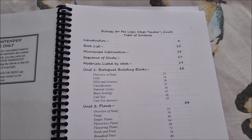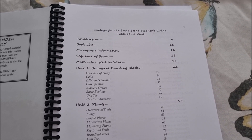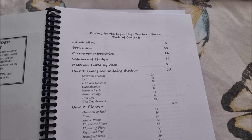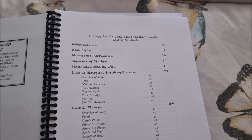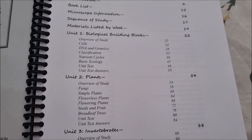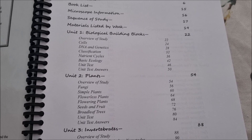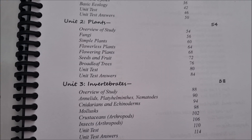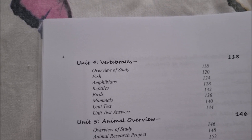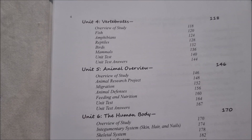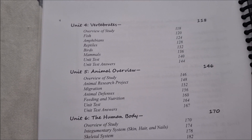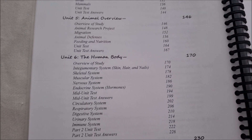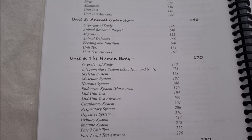For the table of contents, we have Biological Building Blocks for unit one, which includes things like cells, DNA and genetics, classification, nutrient cycles, basic ecology, the test, and the answer key. We have plants, which covers fungi, simple plants, flowerless plants, flowering plants, seeds and fruits, and so on. Unit three is invertebrates. Unit four covers vertebrates, unit five is animal overview, and unit six is the human body, which is quite a long one, covering all the different systems.